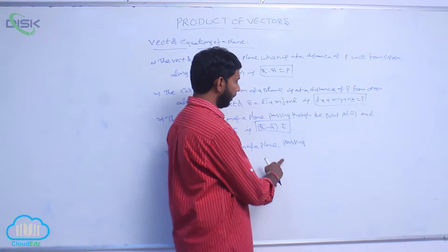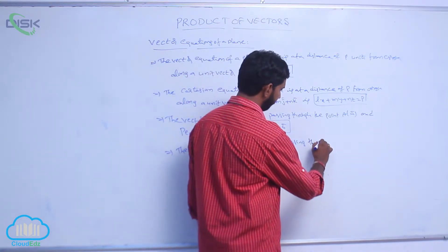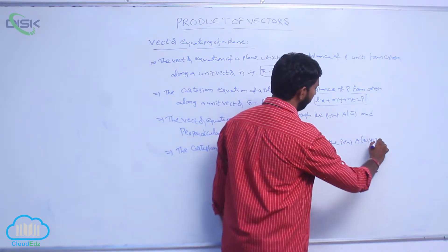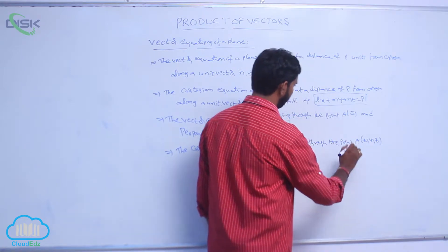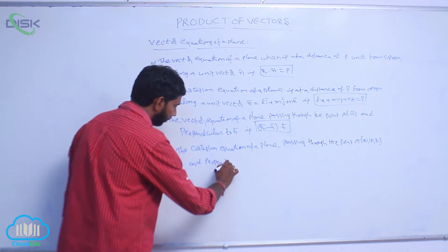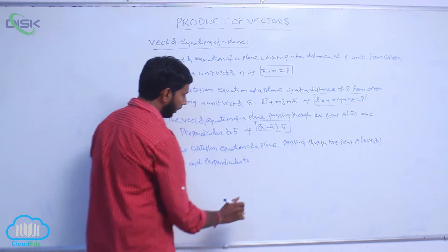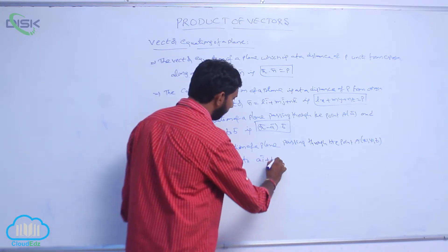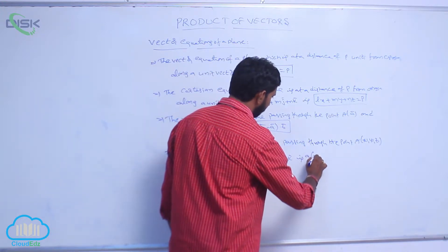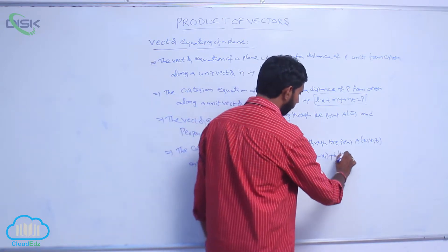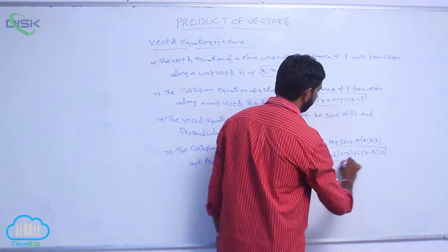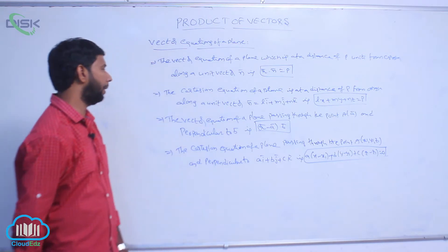The Cartesian equation of a plane passing through the point A(x1, y1, z1) and perpendicular to the vector a·i̅ + b·j̅ + c·k̅ is: a(x − x1) + b(y − y1) + c(z − z1) = 0. This is the Cartesian equation of a plane passing through the point and perpendicular to the vector.